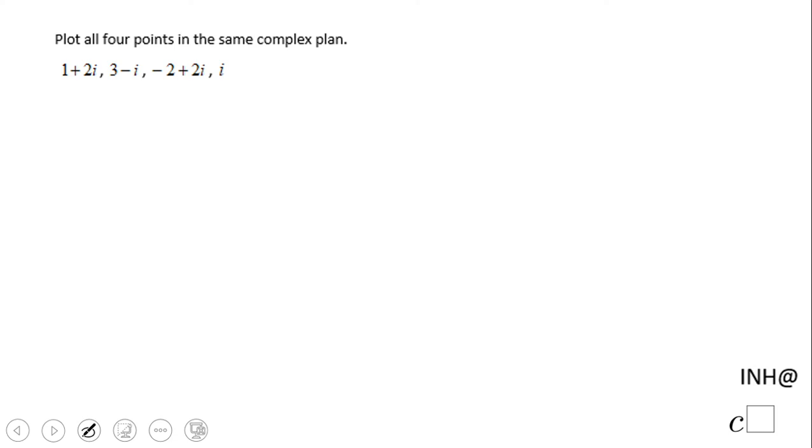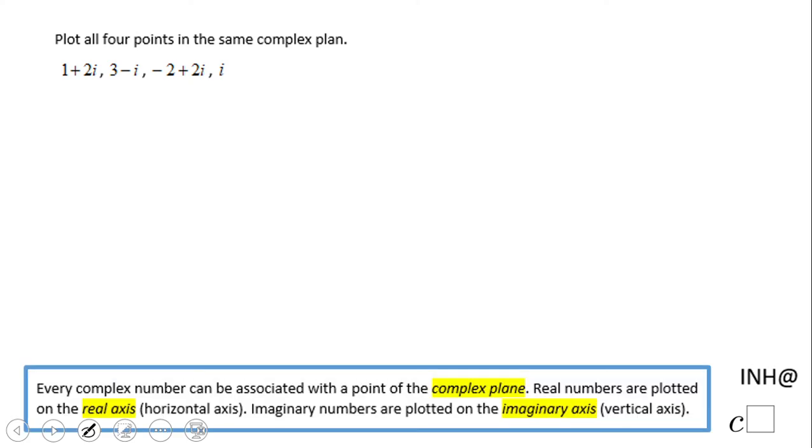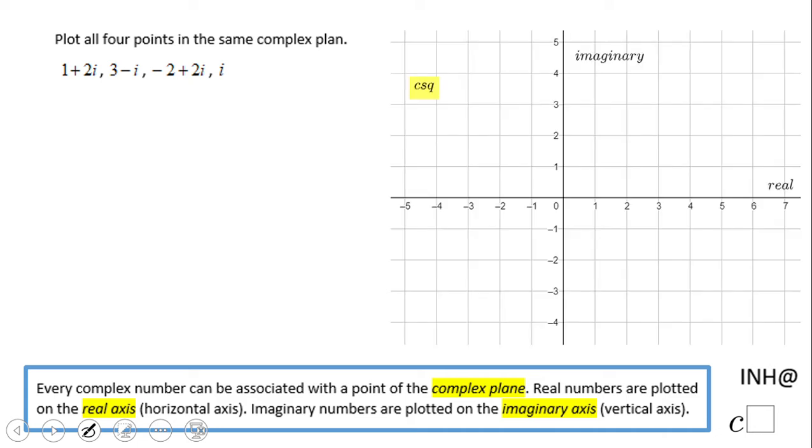Welcome or welcome back to iNeedHelpAtCSquared. In this example, we're going to plot four points for complex numbers in a complex plane, which is defined as you see on the screen. We have a horizontal line which is called the real axis and a vertical axis which is the imaginary axis.